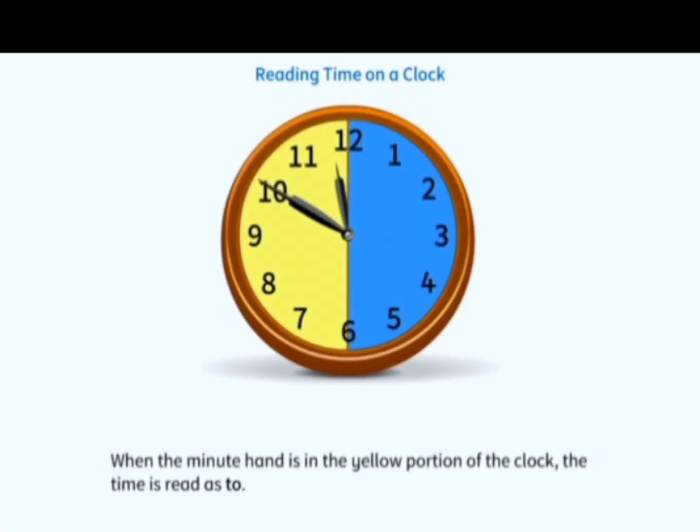When the minute hand is in the yellow portion of the clock, the time is read as to. For example, 10 minutes to 12.